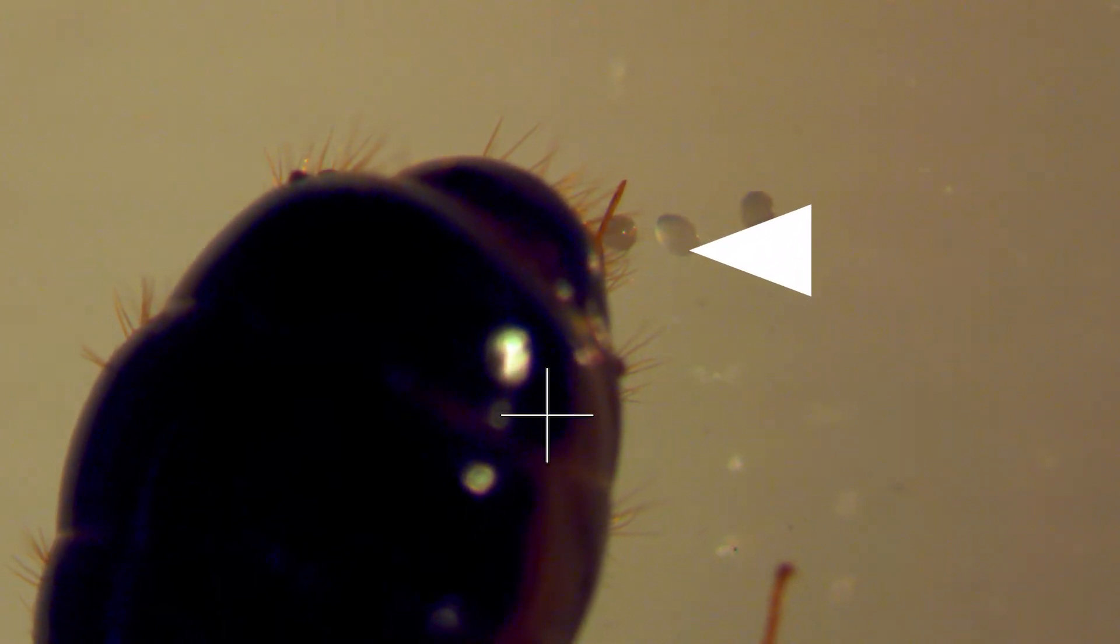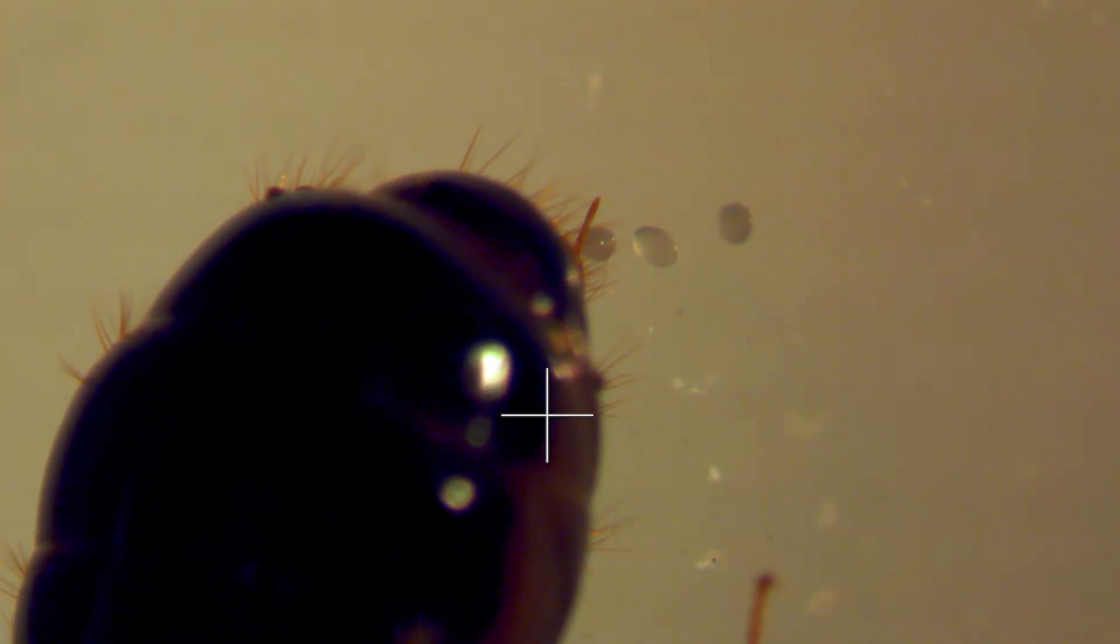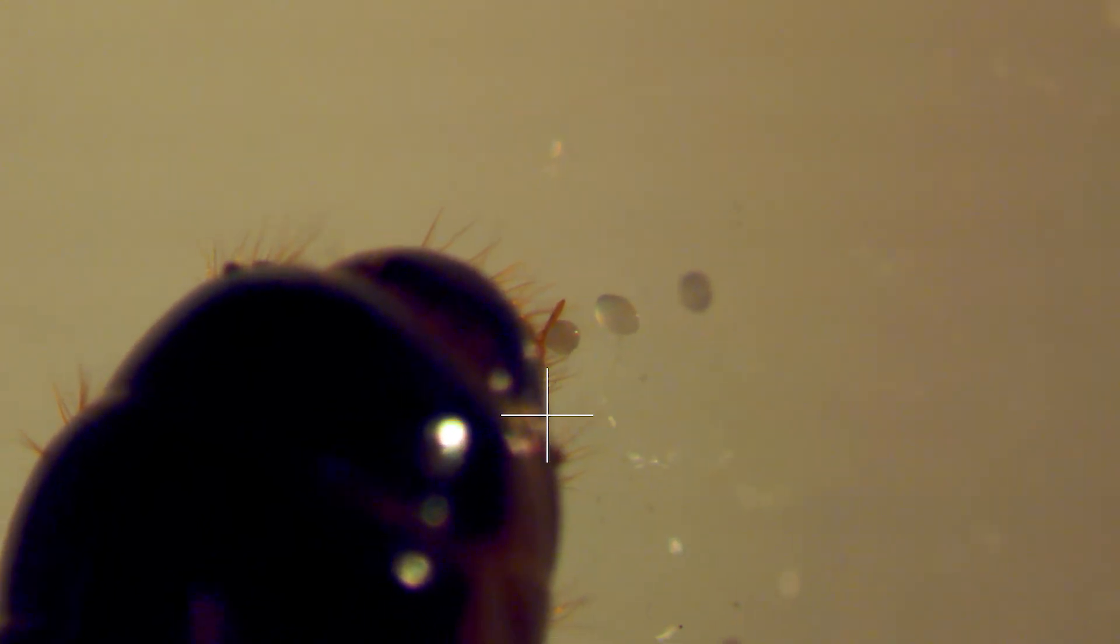A healthy fire ant queen in a mature monogyn colony can lay about 3-4 eggs every minute, and even if you place her out of the nest, she would still keep laying eggs.